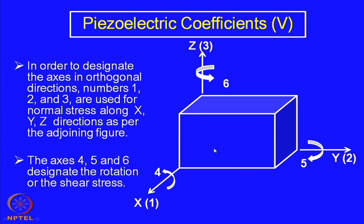Sometimes the stress may not be a normal stress but a shear stress. For normal stress, one considers the Young's modulus to correlate stress and strain, whereas when there is shear stress, the coefficient is different and one must take into account the shear modulus of the material. There are rotational stresses acting on the surface of the specimen — not perpendicular to any surface — and these shear stresses can be represented and numbered as 4, 5, and 6.